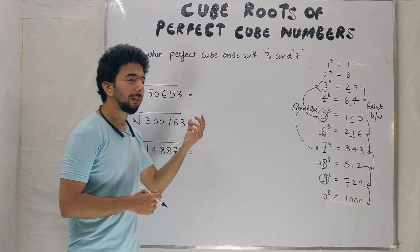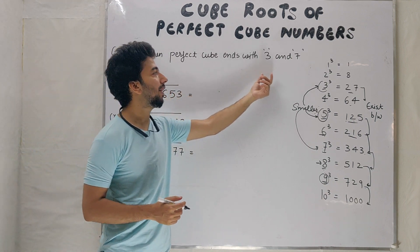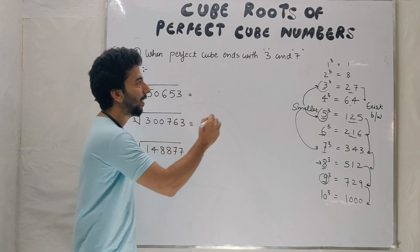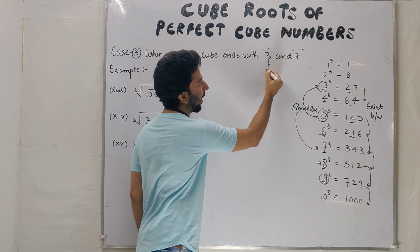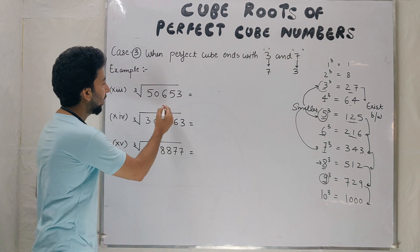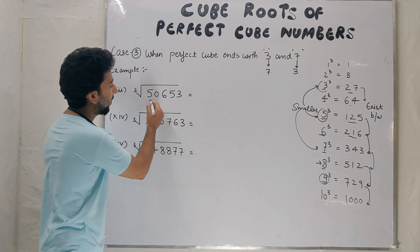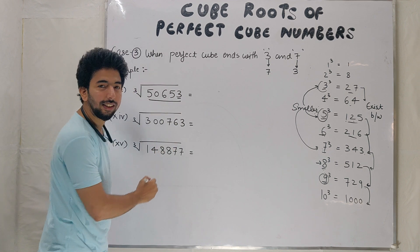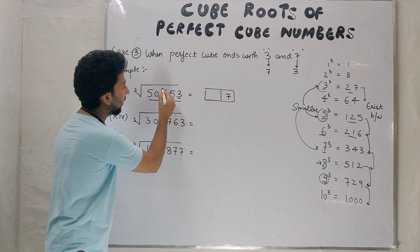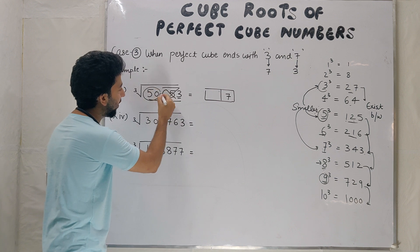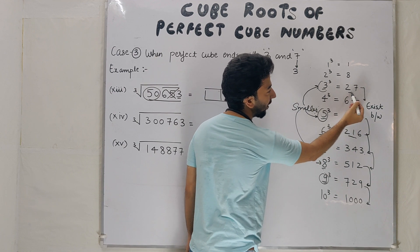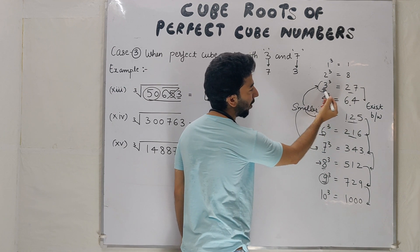Case 3: when perfect cube ends with 3 and 7. If ends with 3, cube root ends with 7. If ends with 7, cube root ends with 3. Example 13: 50653. Ends with 3, unit place 7. Cancel, 50. Between 27 and 64, 3 and 4, smaller is 3, so 37.